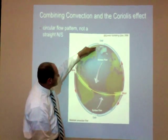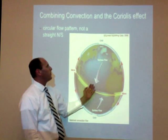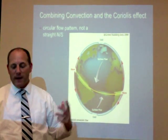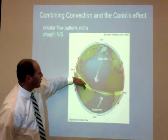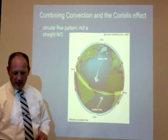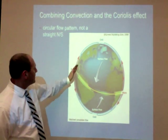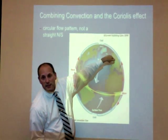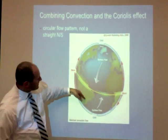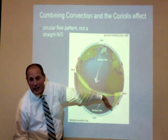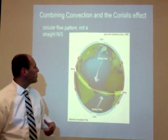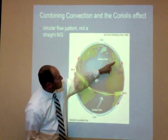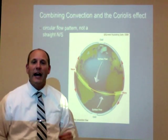The air cools and sinks, then gets pulled back towards the equator. But this isn't exactly what happens. Our convection is that general circulation pattern that moves between the equator and the poles — it's that vertical movement of molecules. Coupled with the Coriolis effect, molecules moving above the earth towards the pole are not going straight; they're being deflected to the right in the northern hemisphere and to the left in the southern hemisphere. That combination gives this circular airflow pattern — it's not a straight north-south pattern.